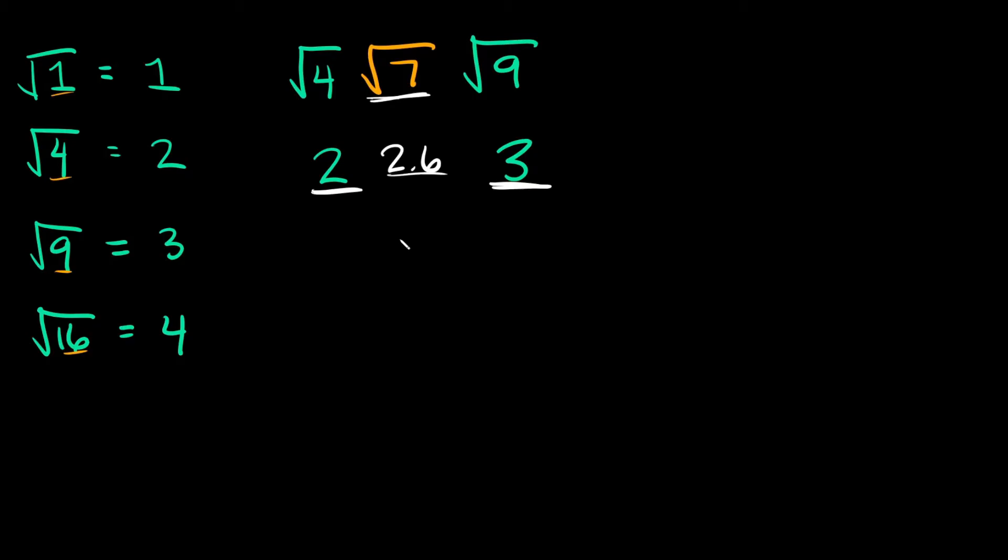For my answer, I would simply say the square root of 7 is greater than 2, but it's less than 3. This is how we show that the square root of 7 is somewhere between 2 and 3.